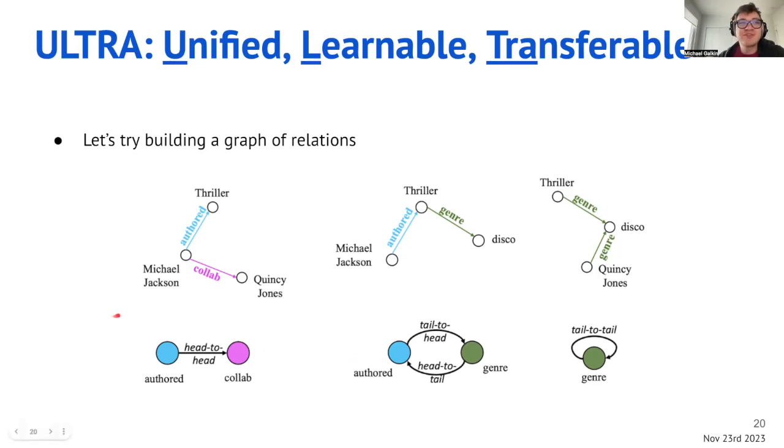The idea of ULTRA — which stands for Unified, Learnable, and Transferable Representations — is that we can build relative relational representations, going one level up from entity representations. We try to use relational interactions and capture them by building a graph of relations: how relations interact with each other in a graph. There are several fundamental interactions we call fundamental, and those are the ones that are apparent on inspection.